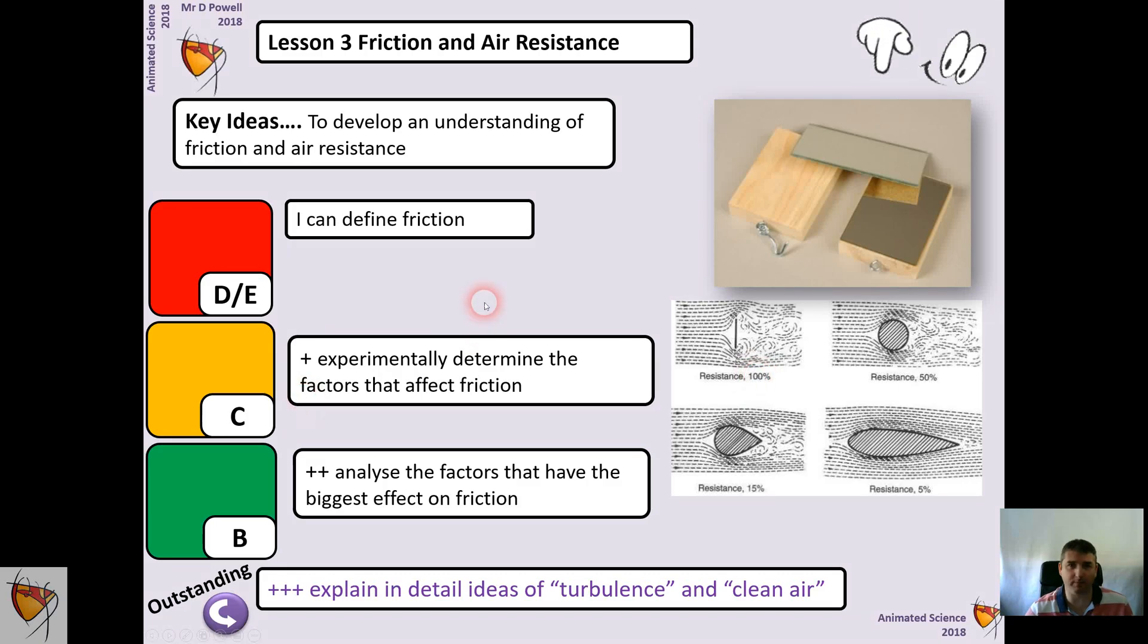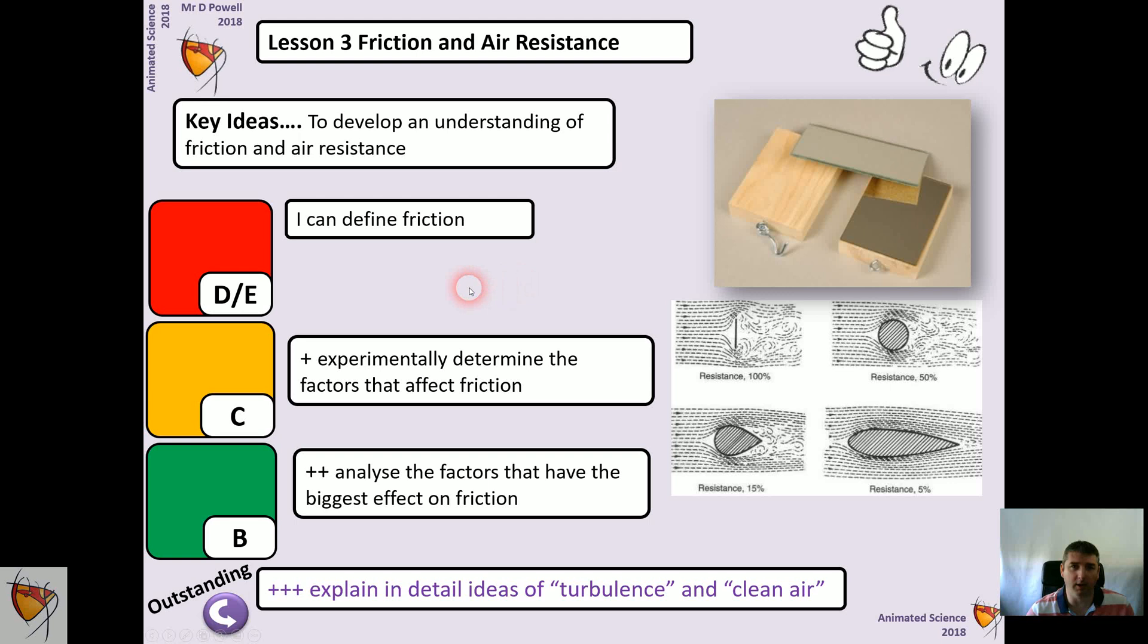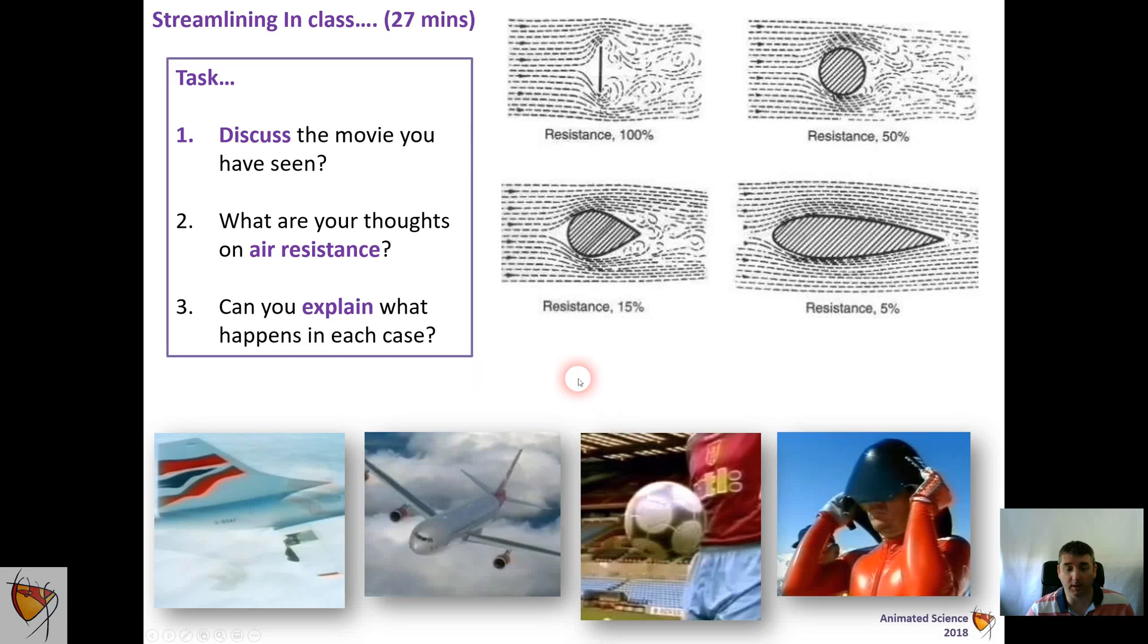So we're looking at air resistance, friction—we've got to be able to define friction, experimentally determine the factors that affect friction, analyze the factors that have the biggest effect, try and think about turbulence and streamlining.